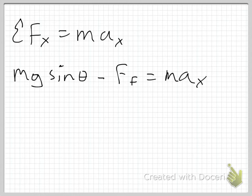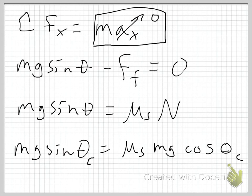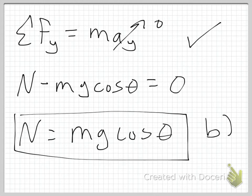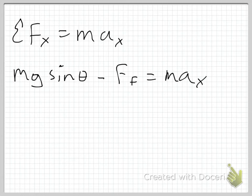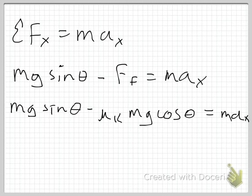So I can come back over here and say I've got mg sine of theta, that's my component of gravity, minus my frictional force. And that is equal to ma sub x. So my frictional force now is mu kinetic times the normal force. My normal force was mg cosine of theta. That's my normal force. That has not changed. What has changed is what I'm plugging in for mu kinetic.